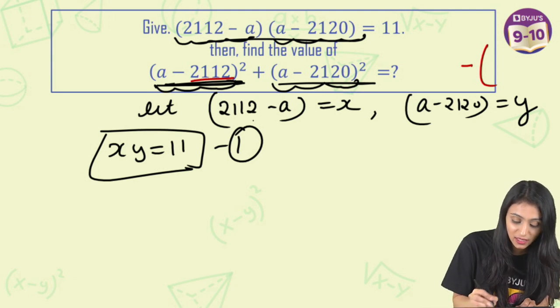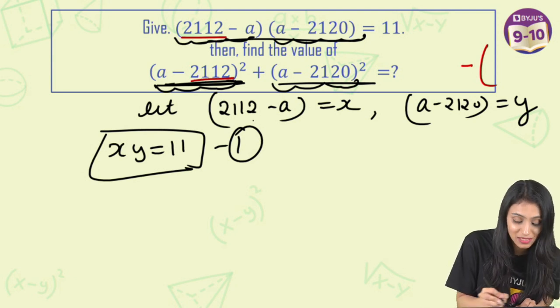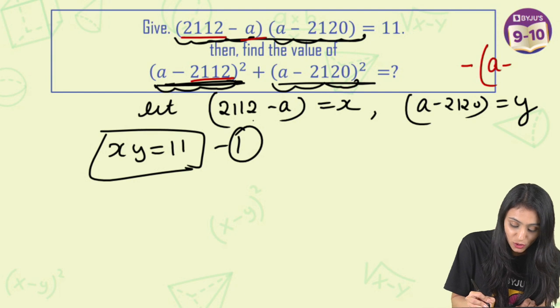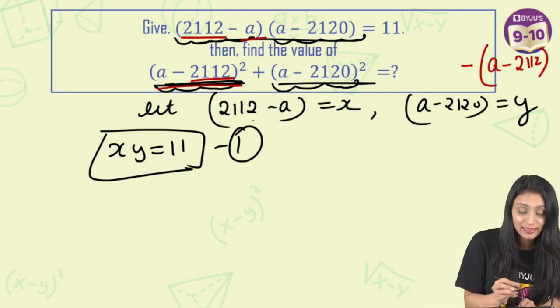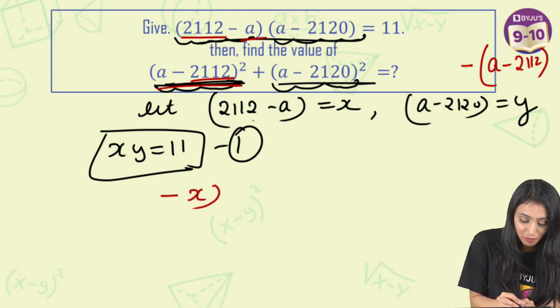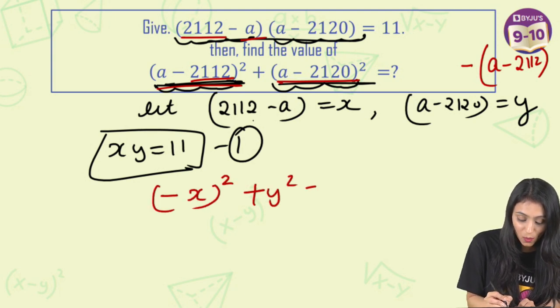So that means this 2112 which is positive here, that becomes negative and this becomes positive. That's going to be a-2112, right? So simply I can say that this is basically minus x square and this is actually plus y square.